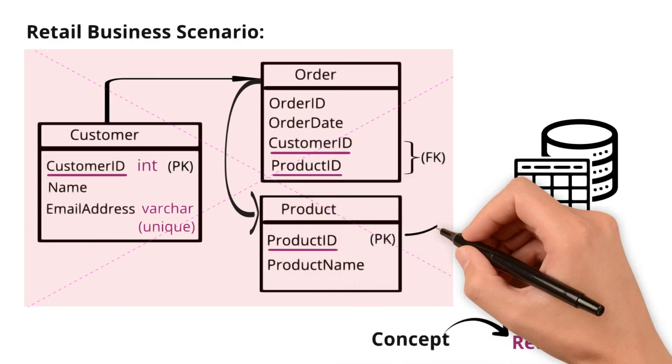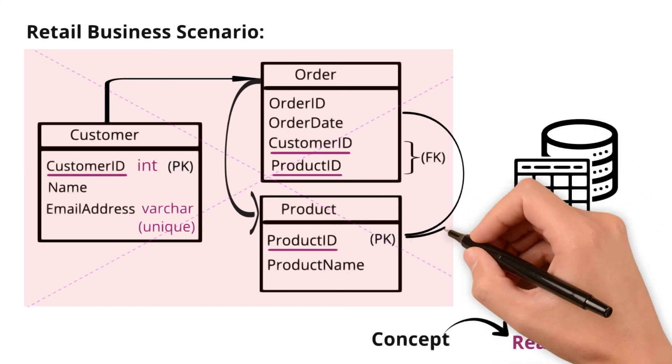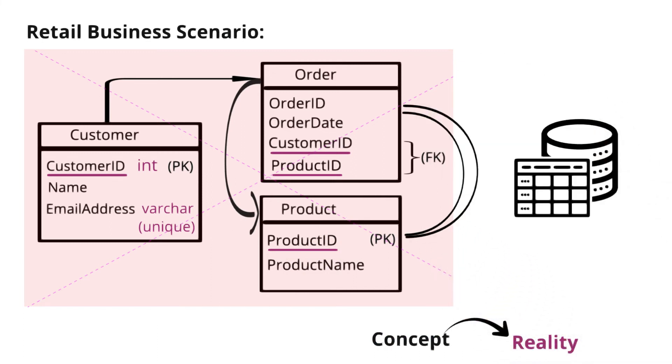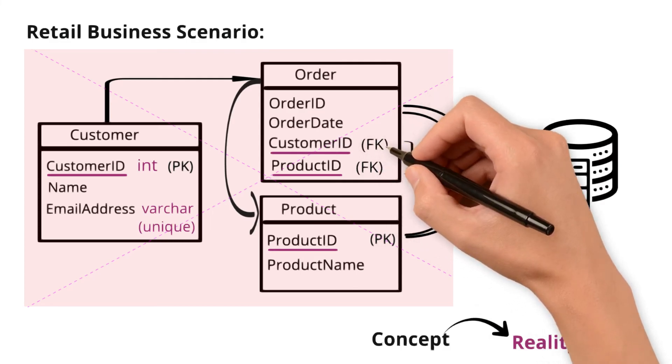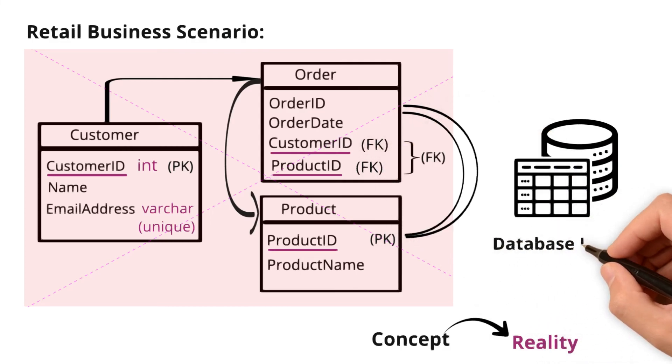As one product can be part of multiple orders, the one-to-many relationship between product and orders is enforced through foreign keys, and this is to ensure database integrity.